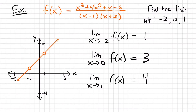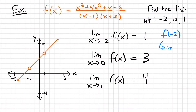Now let's compare those limit values to what the actual values are for these points on the function. If we look at the function at the point negative 2, we already discussed that we're going to have an undefined value when we plug in negative 2, and that matches up with the graph where we have this hole. So this value would be undefined — that's different from the limit, which was 1.